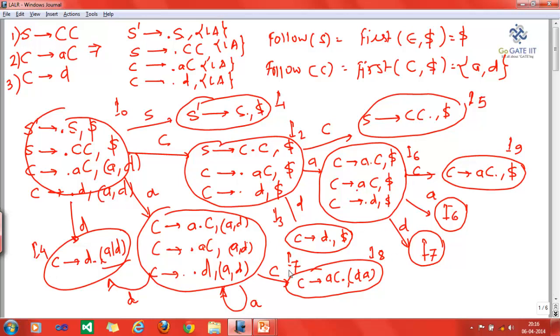We have I7. This state is nothing but the I7 state. You can see that it produces the third production C tends to D dot with a different look-ahead symbol. Here we have A and B, and here we have dollar. According to the definition for LALR parser, we will merge I4 and I7.